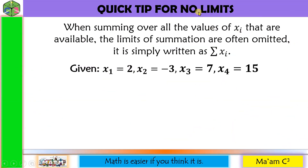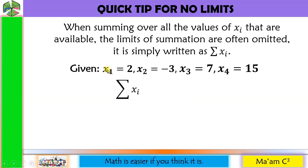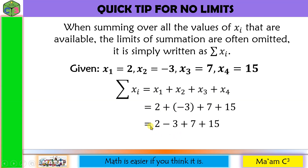Some quick tips. For no limits: when summing over all available values of X sub I, the limits of summation are often omitted and it is simply written as the summation of X sub I. If you see only the summation of X sub I with no lower and upper limits, it means you are going to get the sum from the first value up to the last. So we have X sub 1 plus X sub 2 plus X sub 3 plus X sub 4. Substituting: 2 minus 3 is negative 1, plus 7 is positive 6, plus 15 is 21.